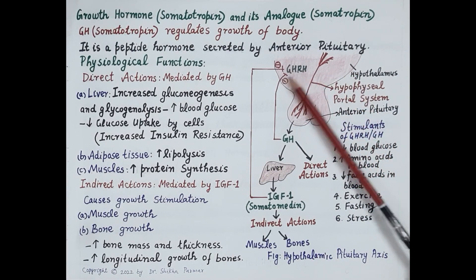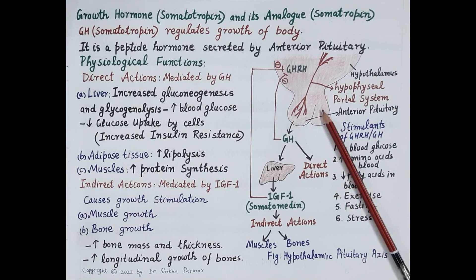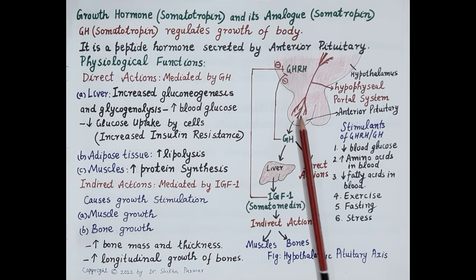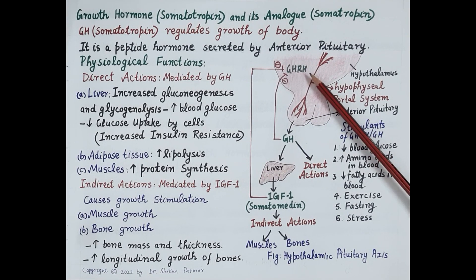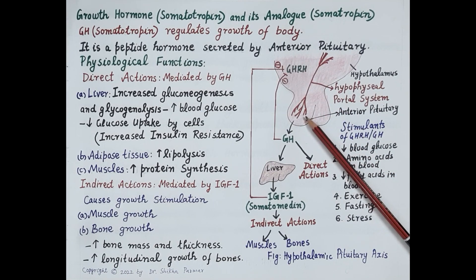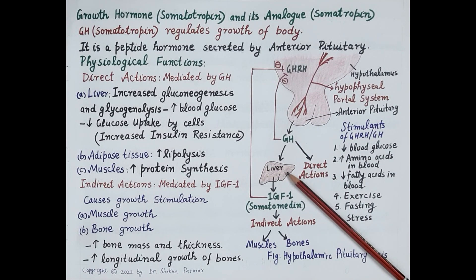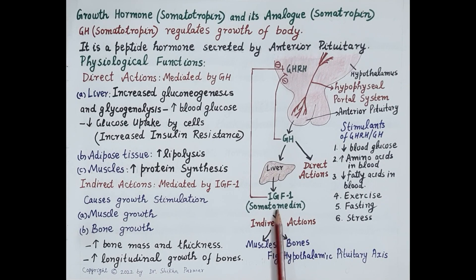This is a zoomed view of the hypothalamus. Located below the hypothalamus is the pituitary gland, which has two lobes: anterior pituitary and posterior pituitary. The hypothalamus produces GHRH, that is growth hormone releasing hormone, which stimulates the anterior pituitary to produce growth hormone. Growth hormone further stimulates the liver to produce insulin-like growth factor 1, or IGF-1, also called somatomedin.